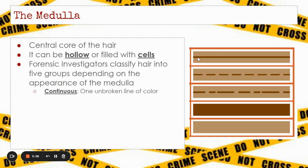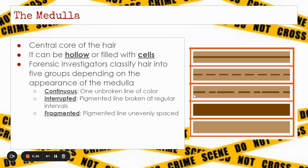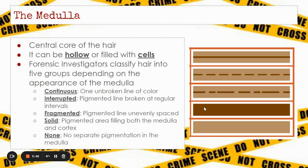If it is a continuous medulla, it is one unbroken line of color. If it's interrupted, it will be a pigmented line broken at regular intervals — it follows a predictable pattern of breaks. Fragmented is similar, but the breaks are unevenly spaced. Solid is a pigmented area that fills both the medulla and the cortex — notice continuous is just that thin portion, while solid fills almost the entire hair. Or it could be absent — no pigmentation in the medulla at all. So: continuous, interrupted, fragmented, solid, or none.